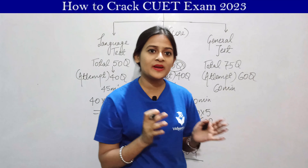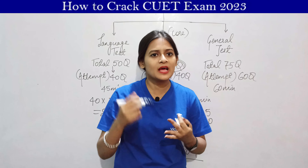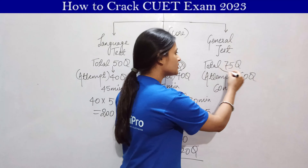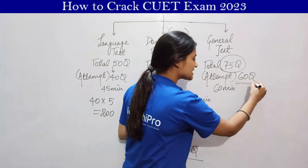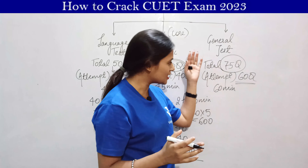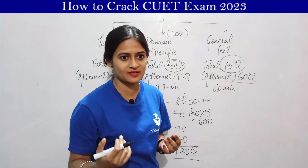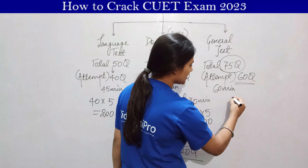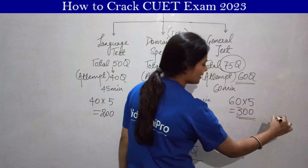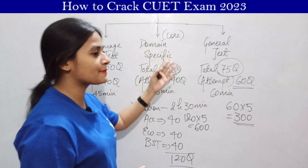The third section is the general test. In 2022, Delhi University did not consider the general test, but BHU, Allahabad University, and many other universities gave all three sections equal importance. Out of 75 questions, you need to attempt 60 in 60 minutes. At 5 marks each, this section is 300 marks. So your overall paper is 1100 marks in total. It depends on the universities which sections they consider for your course, but you have to prepare everything — you can't leave anything out.